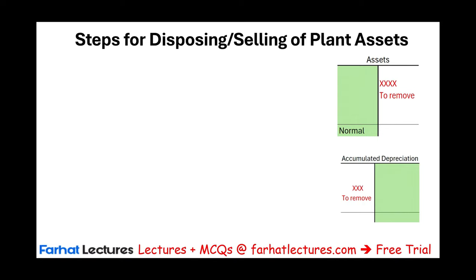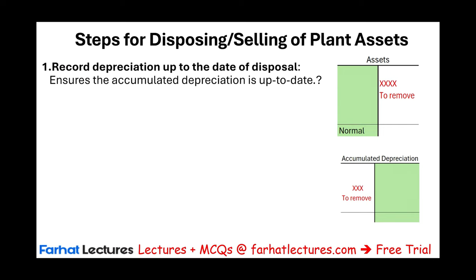First, we look at the steps for disposing or selling plant assets. The first thing we have to do before we dispose or sell a plant asset is to make sure the depreciation is up to date. In financial accounting, most of the time you will be given the accumulated depreciation as of the disposal date. But if you are not given this information, you want to compute the depreciation up to the disposal date.